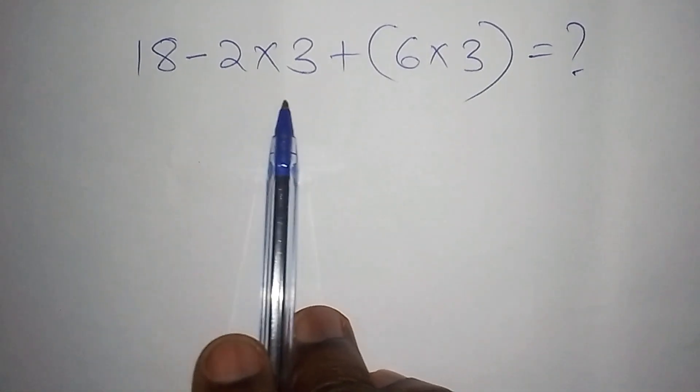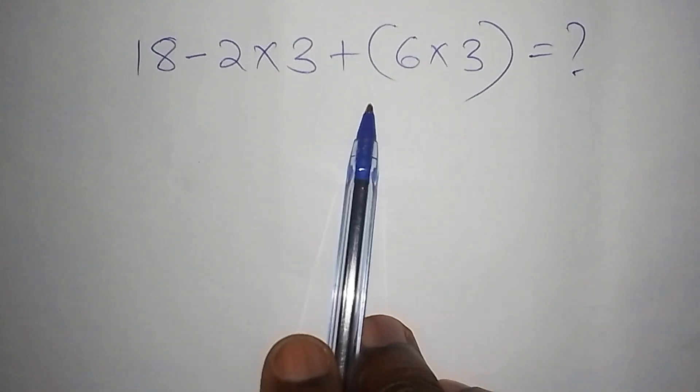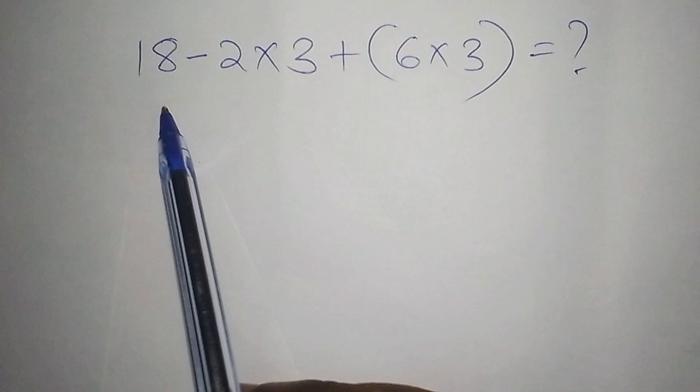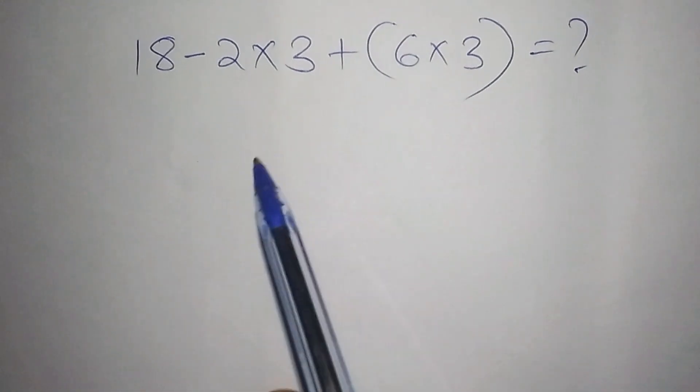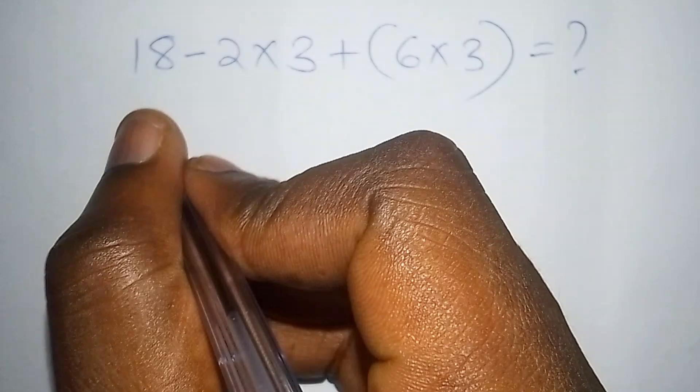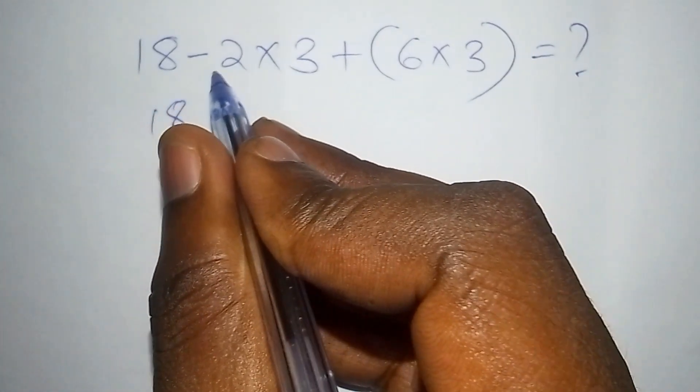I want to take you through this math problem step by step. The first mistake that you should avoid is working this operation directly. For example, avoid putting it like here you shall have 18...